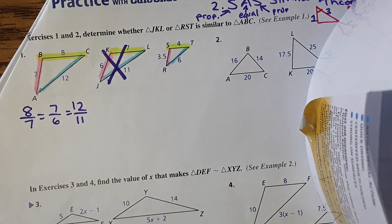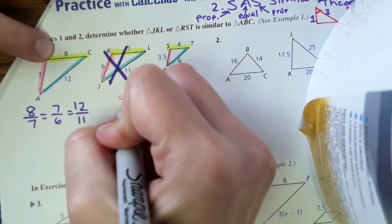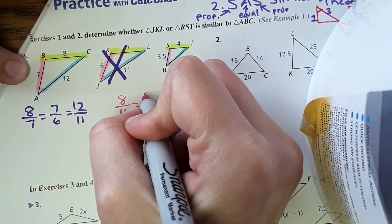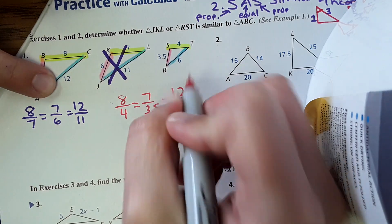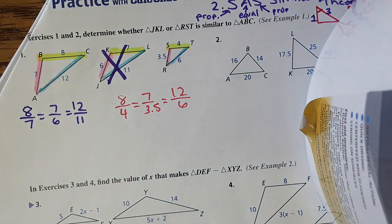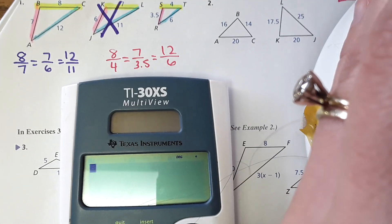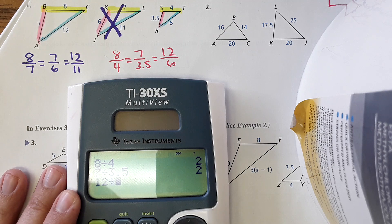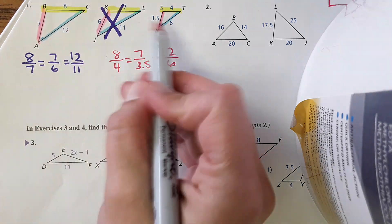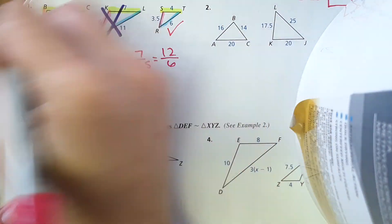Now I'm going to do this again with the other triangle — corresponding with corresponding. So 8 over 4 for the yellow, 7 over 3.5, and 12 over 6. Plug it into the calculator — most of you probably don't need to. You can see that 8 divided by 4 is 2, 7 divided by 3.5 is 2, and 12 divided by 6 is 2. It all matches. So therefore these two are proportional and they're similar.